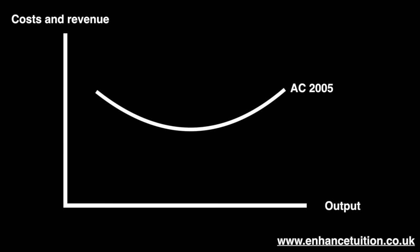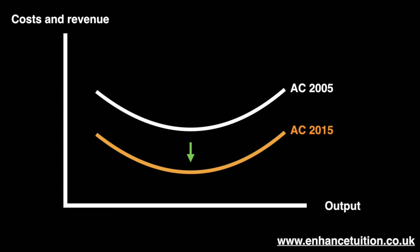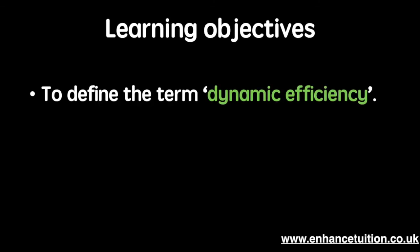This brings us to AC 2015. Lower average costs are the result of the investment into innovation 10 years later. By now you should be able to clearly define dynamic efficiency and represent it on a firm's short-run and long-run average cost curve.